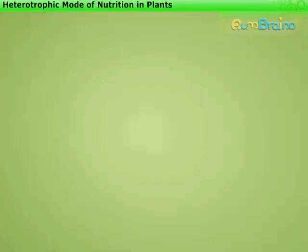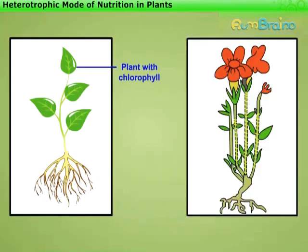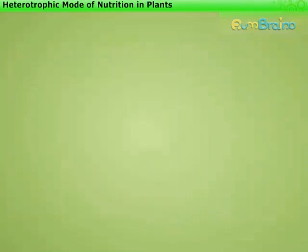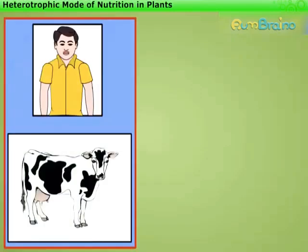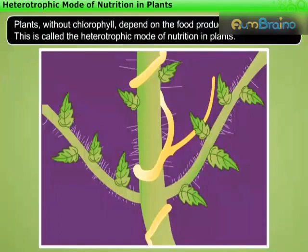Heterotrophic mode of nutrition in plants. You have learned that green plants have chlorophyll, but there are some plants which do not have chlorophyll, so they cannot synthesize their food. You may wonder how such plants survive. Just as heterotrophs like humans and animals depend on plants for their food, plants without chlorophyll depend on food produced by other plants. This is called the heterotrophic mode of nutrition in plants.